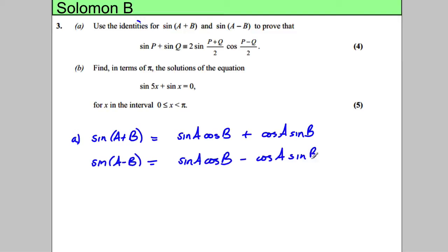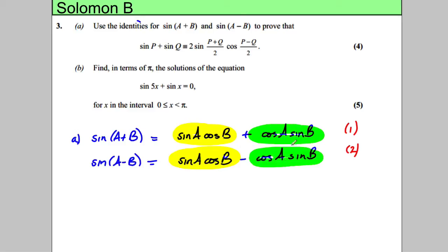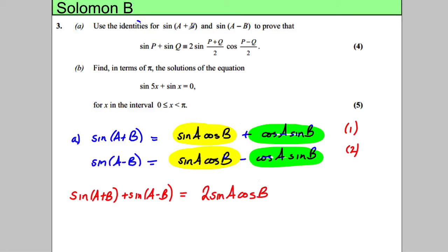Now if we added these two together, let's see what would happen. I'm going to add equation one and equation two. Clearly I get two lots of sinA cosB, and the cosA sinB terms negate each other and disappear. So I would get that sine(A+B) plus sine(A−B) is equal to two sinA cosB.